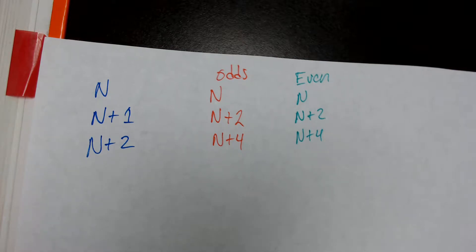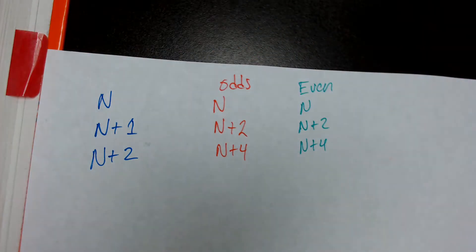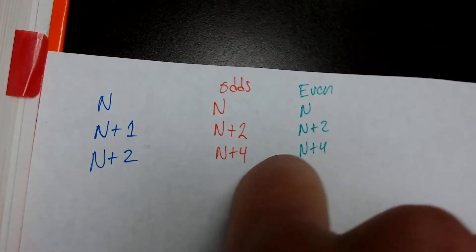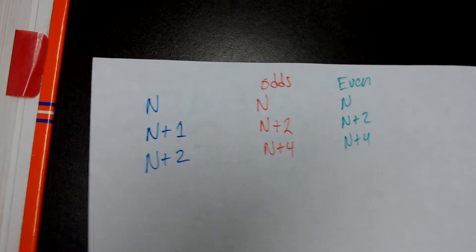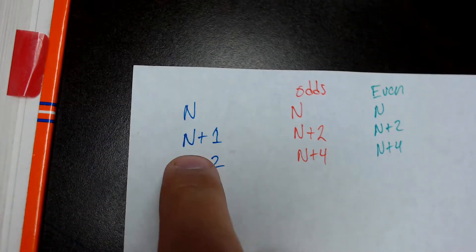That is probably one of the most common mistakes that I see on these types of problems. So, regardless of even or odd, or odd or even, the distance between the numbers will always be the same. And then, if you're just doing normal consecutive integers, it's just n, n plus 1, n plus 2.